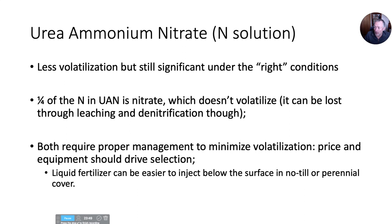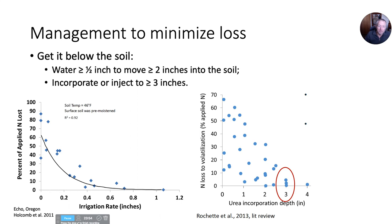Getting it below the soil: data with irrigation shows that if we get up to that half inch, the percent of applied nitrogen that's lost gets down to around zero. With incorporation by tillage to at least three inches depth, that's going to minimize the loss of applied nitrogen to volatilization.